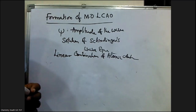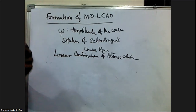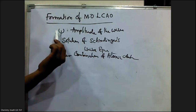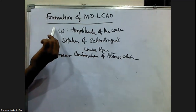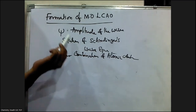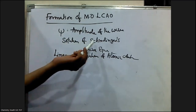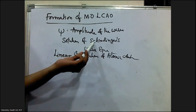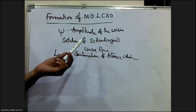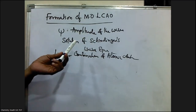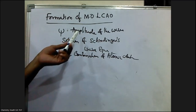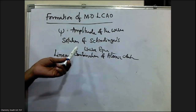The atomic orbitals are represented using the wave function psi. Psi is the solution of the Schrödinger's wave equation and gives the amplitude of the electron waves. Solving the Schrödinger's wave equation is very difficult for many-electron systems, which is why the LCAO method is used.